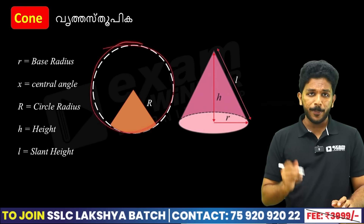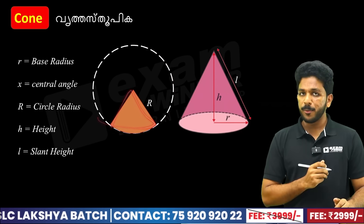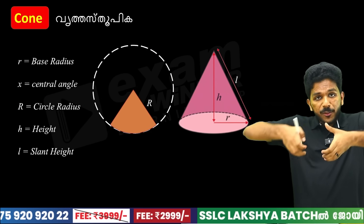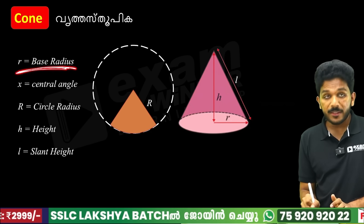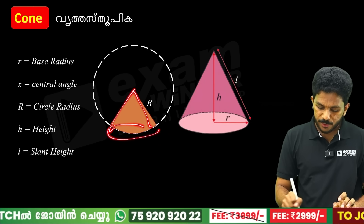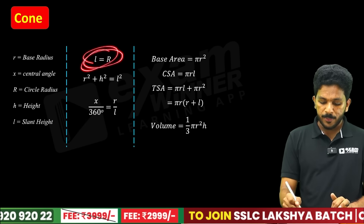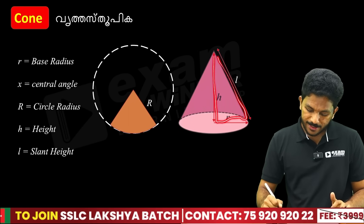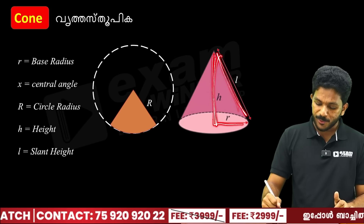This is a very simple shape — the cone. We have a circle as the base. The center of the circle is marked. If the radius is R, we let the slant height be L and the vertical height be H. From the right-angle triangle: R² + H² = L².